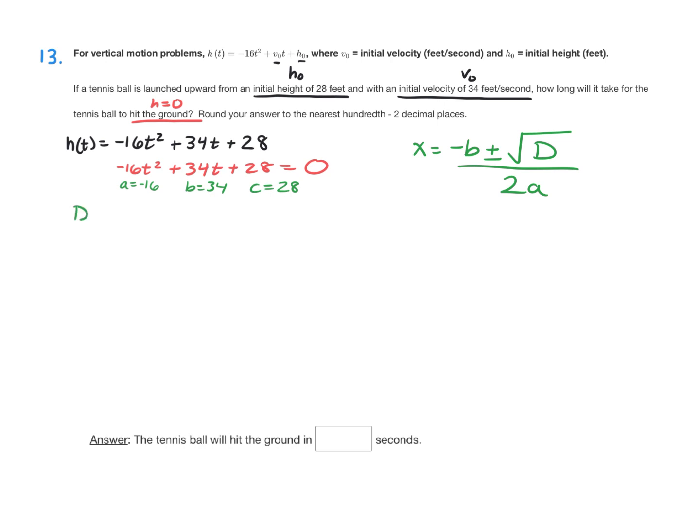So if I go to my formula for discriminant, discriminant equals b squared minus 4ac. Let's plug our numbers in. So that's 34 squared minus 4 times negative 16 times 28.